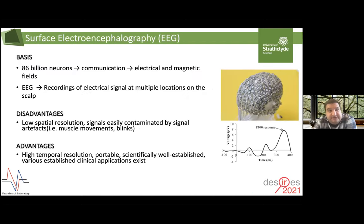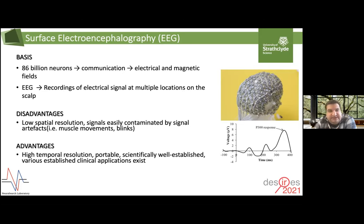The second neuroimaging technique I would like to describe is EEG. In the brain there are about 86 billion neurons, and they communicate with each other. This communication creates electrical and magnetic fields. What EEG does is record these electrical signals at the scalp level. The disadvantage is that it has low spatial resolution and can easily be contaminated by artifacts. But it has a very important advantage — high temporal resolution — and it's portable, so it has been used in many clinical applications.